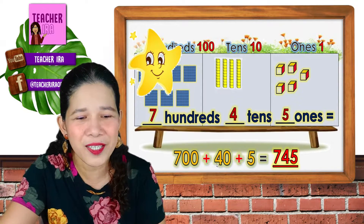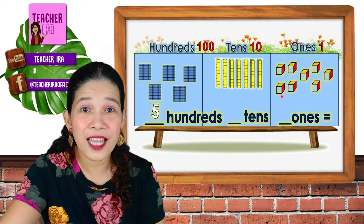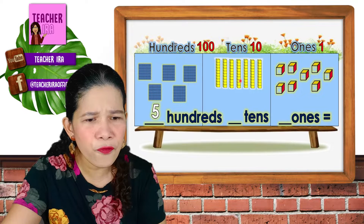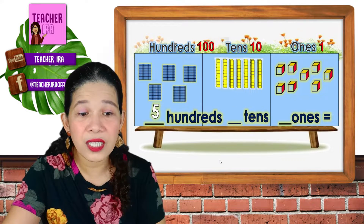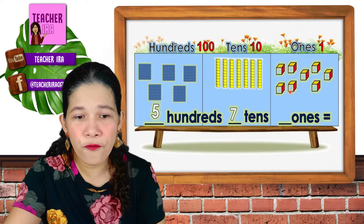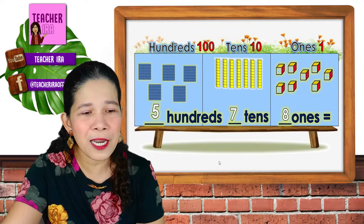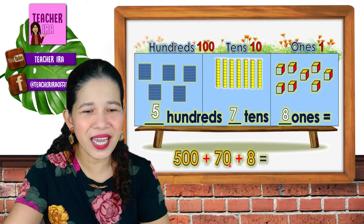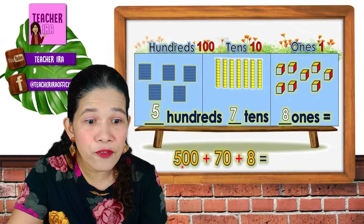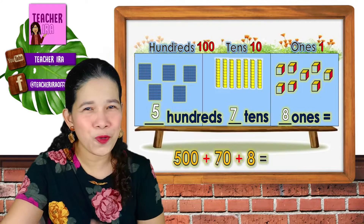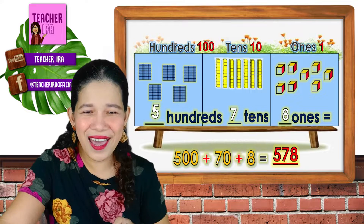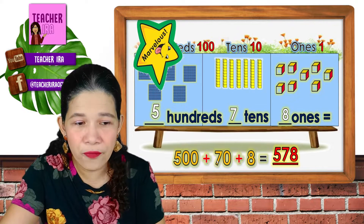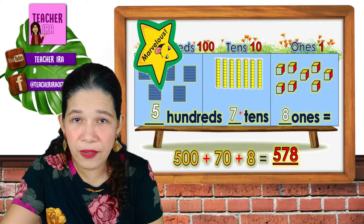Great job! How about this one? Let's count again the 100s, 10s, and 1s. We have 5 hundreds. How many 10s? 1, 2, 3, 4, 5, 6, 7 — so 7 tens. How about the 1s? 1, 2, 3, 4, 5, 6, 7, 8 — so 8 ones. That means 5 hundreds is 500, 7 tens is 70, and 8 ones is 8. So 500 plus 70 plus 8 is 578. The number is 578 because we have 500s, 7 tens, and 8 ones.